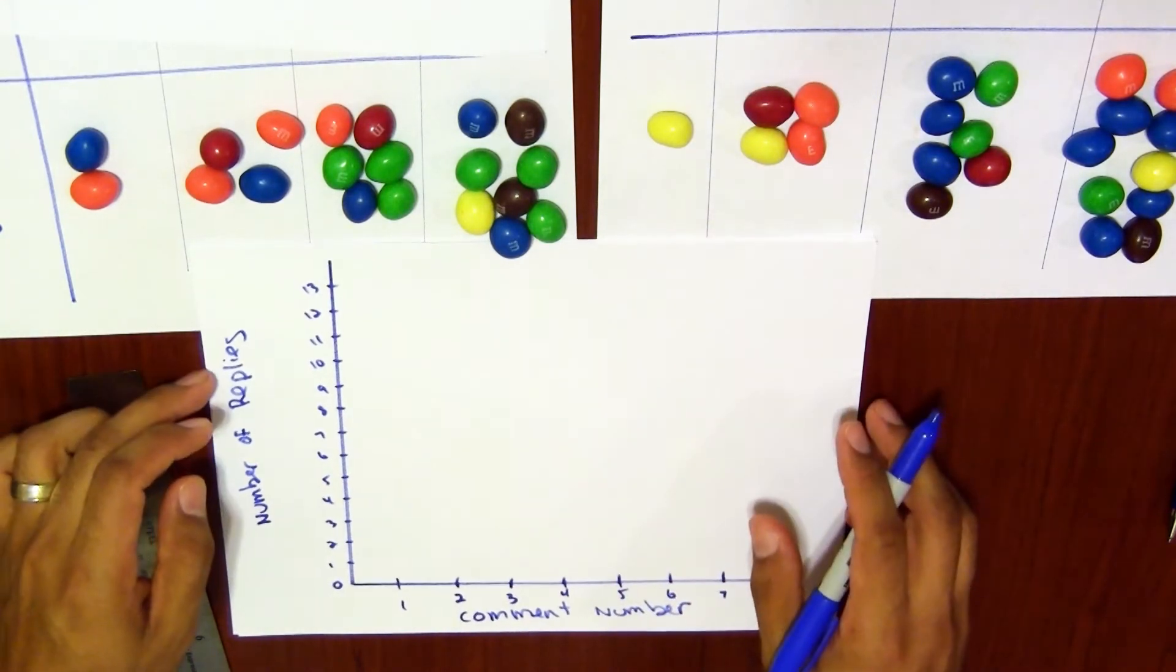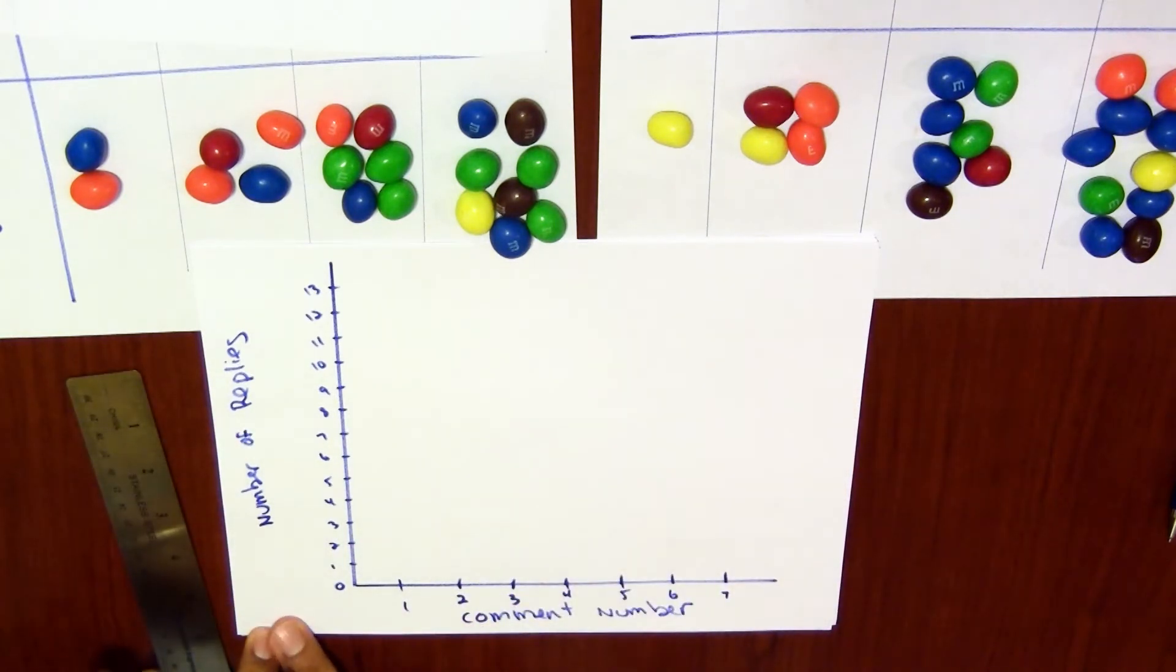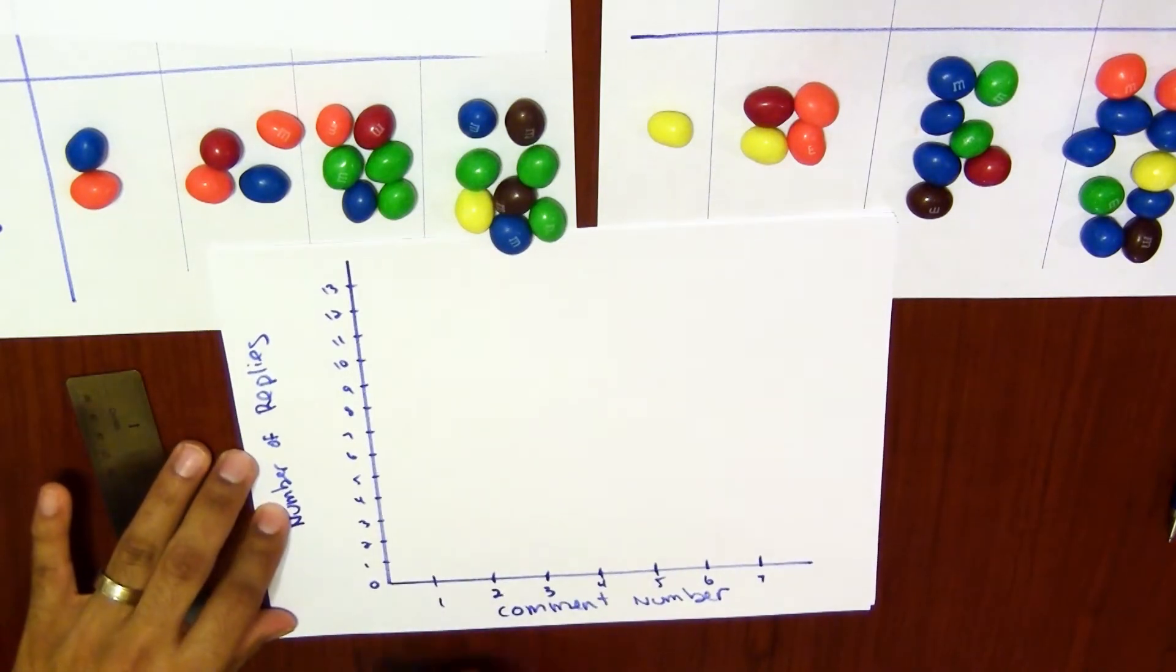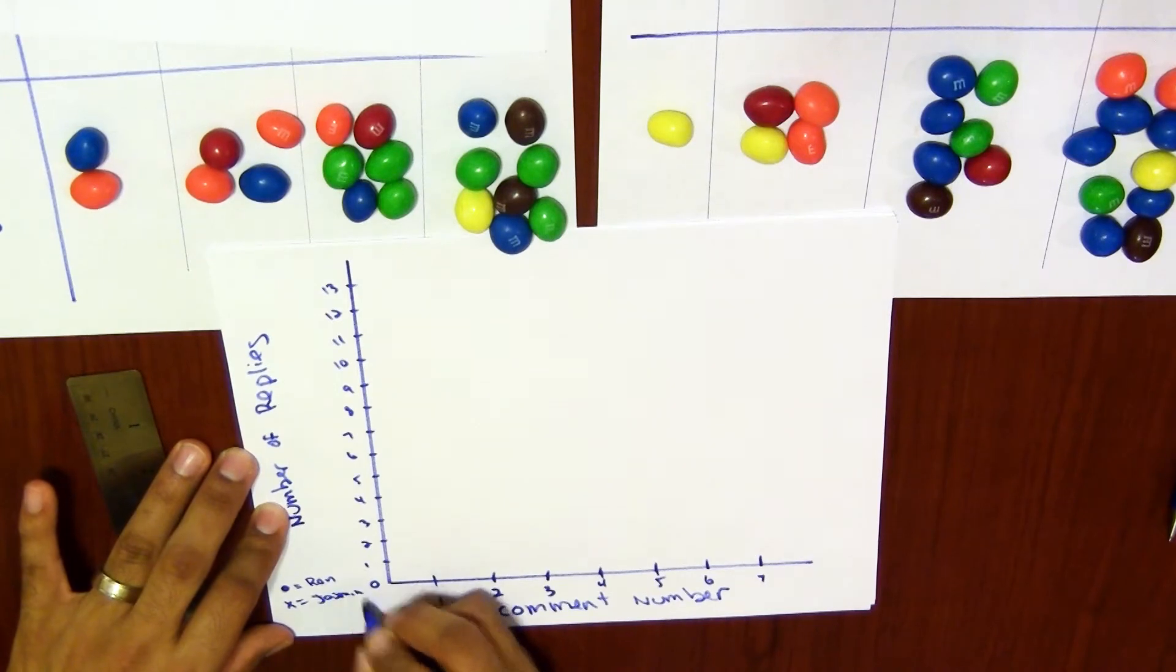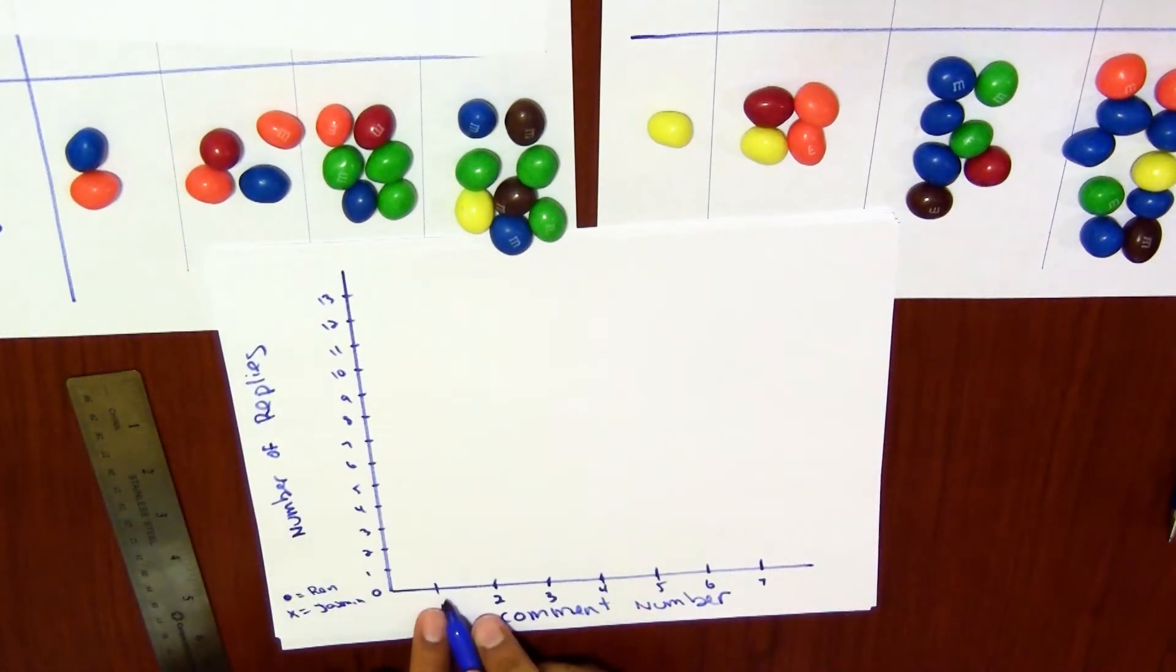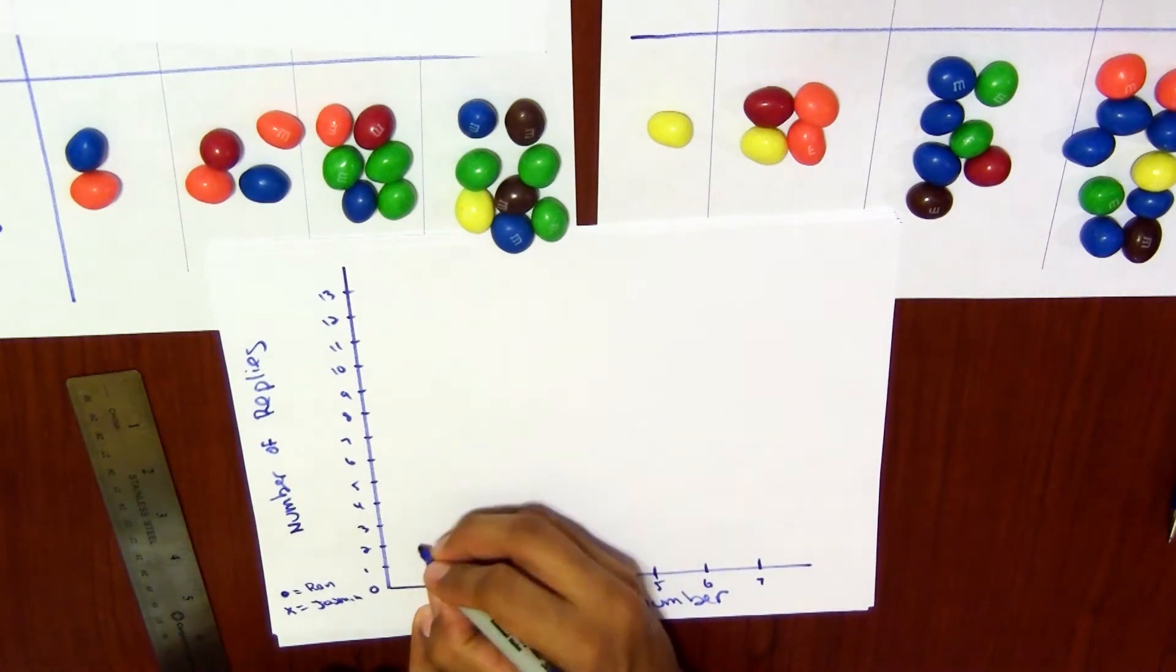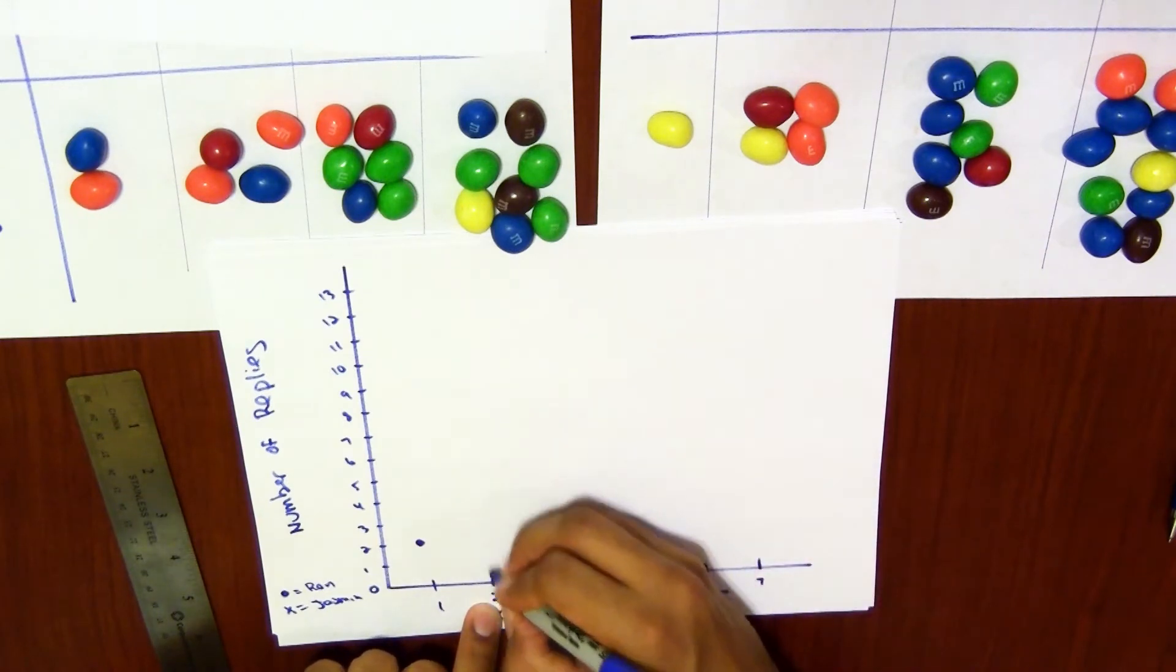All right, so let's go ahead and graph what we know. I'm gonna say down here, since I'm out of space, I'm gonna say that a closed circle represents Ron and an X represents Jasmine. So I'll do Ron's first. Ron, when he got one comment, he had two replies, so close circle here. At two comments, he got four.